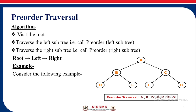The algorithm for the pre-order traversal is: visit the root, then traverse the left subtree — that is called the pre-order left subtree — then traverse the right subtree — that is called the pre-order right subtree. This means we need to traverse it as root, left, right.